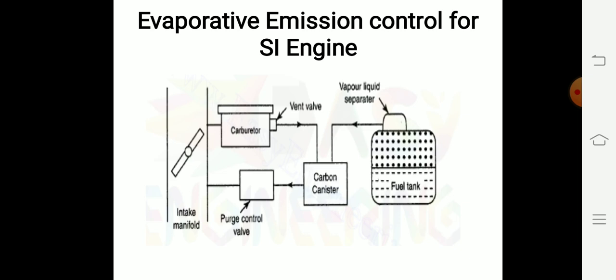Here, above the fuel tank, a liquid vapor separator is there. Here it absorbs the petrol vapors. The vapor is sent to carbon canister. The carbon canister consists of charcoal that absorbs the petrol vapors.